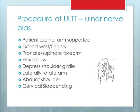Before performing ulnar nerve neuromobilization, first determine the sensitivity of the patient's ulnar nerve by performing the upper limb tension test with ulnar nerve bias. The procedure is as follows: place the patient in supine with their arm supported; extend their wrist and fingers; pronate or supinate their forearm; flex the elbow; depress the shoulder girdle; laterally rotate their arm; and abduct their shoulder. Note where symptoms begin. You can also have them side bend their head away from and then toward the tested arm to confirm a positive upper limb tension test with ulnar nerve bias.